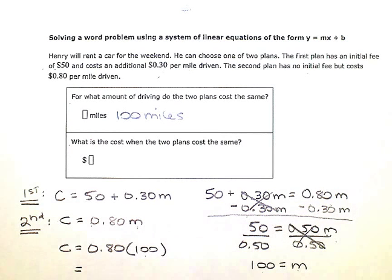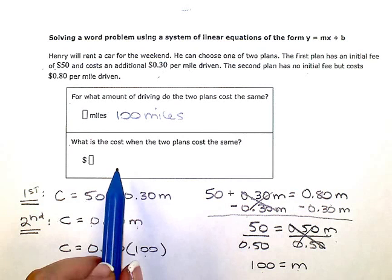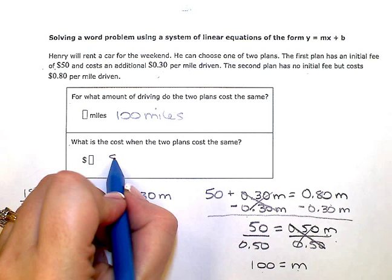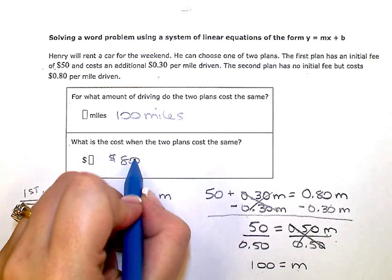So if I do 0.8 times 100, that's going to give me a cost of $80, or C equals 80. So the cost when the two plans are the same would be $80.